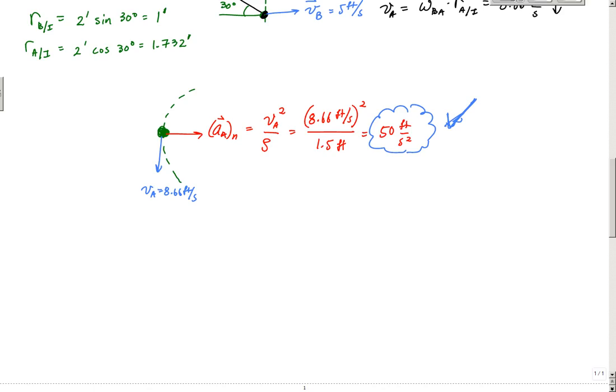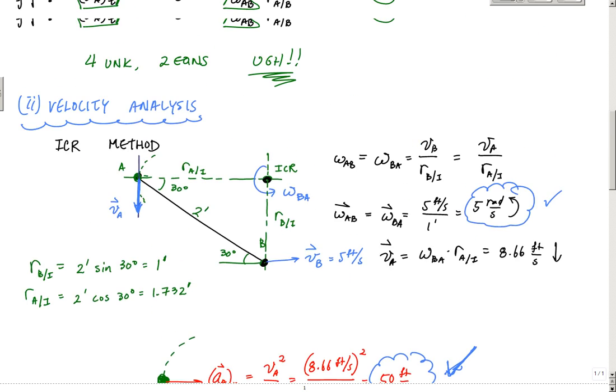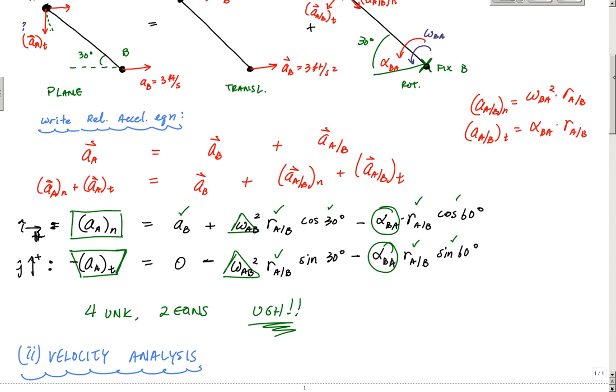But I still don't know what AAT. I don't know what AAT is. But I have a strong sense that it's downwards. I just don't know its magnitude. And that's what I have left to figure out. I have, if I go back here now, I can say, yes, I know omega AB and I know AAN, which leaves me with AAT and alpha, the angular acceleration, as my only two unknowns. And now I have two unknowns and two equations. And now I can solve it.